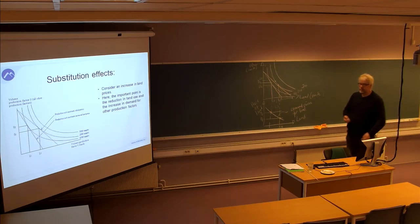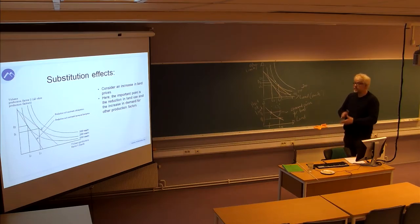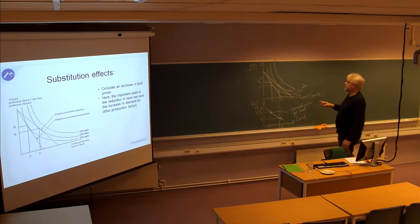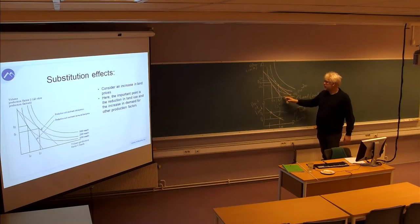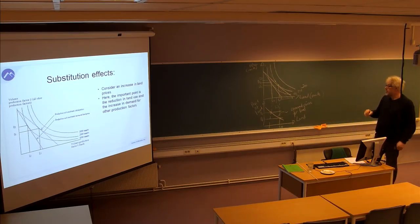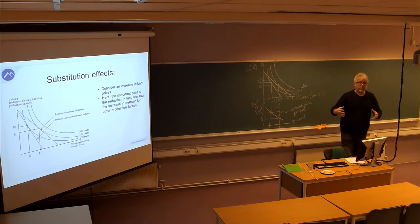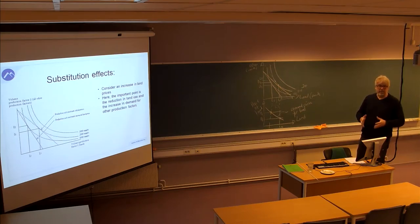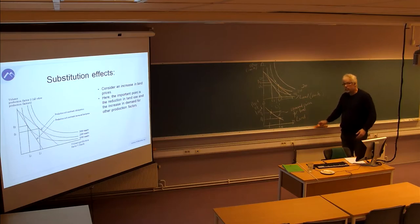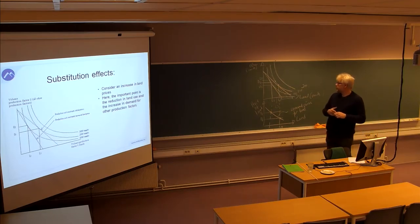So we see that it's quite intuitively reasonable that when the price of one good increases, you would look for other possibilities to maximize the return of land. You can engage in activities that give a high return per square meter by employing more machinery or whatever is needed to produce the goods. So this is the substitution effect that we talk about in the bid-rent curves.